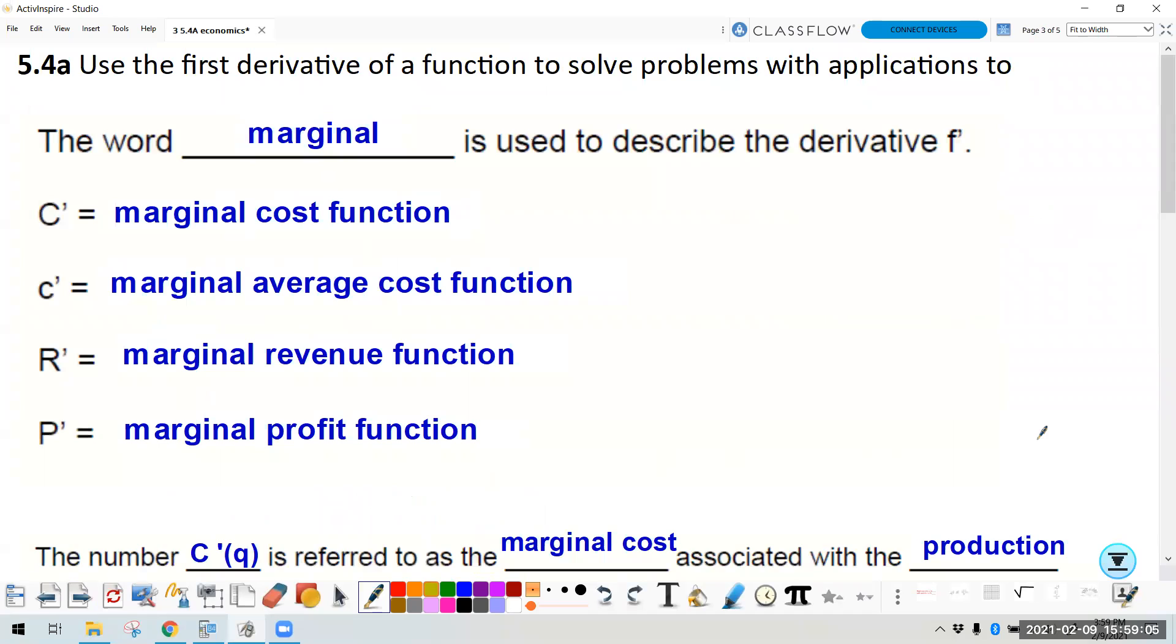The word marginal is used to describe the derivative when it comes to these economic concepts. Marginal cost is derivative of the cost. Marginal average cost, derivative of average cost. Marginal revenue, derivative of revenue, and so on. So marginal means derivative. Pause here, or pause the video so you can copy that down into your packet and your notes.